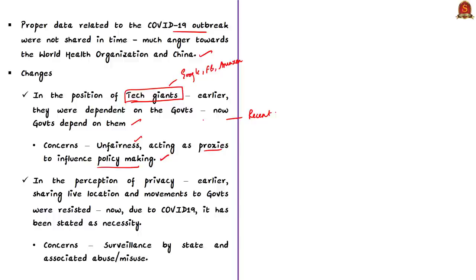The second change highlighted by the authors is the changing idea of individual privacy. Earlier, sharing live locations with governments and the power of governments to track individuals were firmly resisted because it affected privacy. Now this resistance has changed as a result of the COVID-19 pandemic, because governments need to track every individual to prevent the spread of the pandemic. Countries have introduced applications requiring sharing of live locations and movements with the government or authorized agencies. While in some countries these appear to be in line with sufficient protection standards, in others they were highly criticized as certain technical standards were not met.